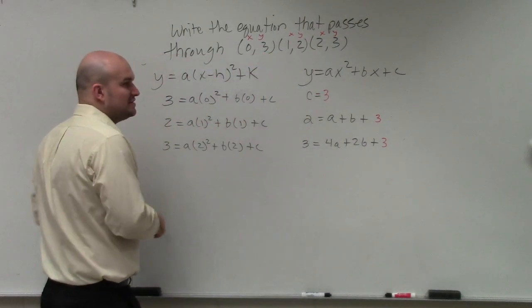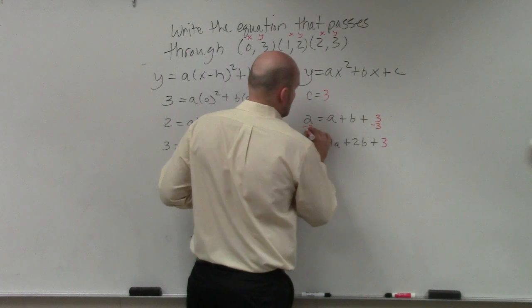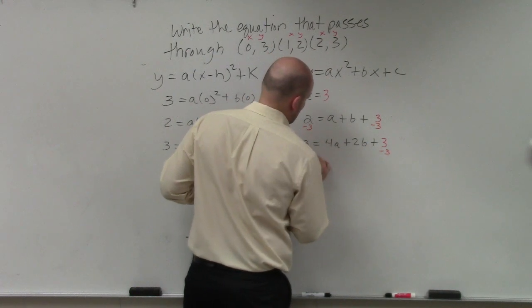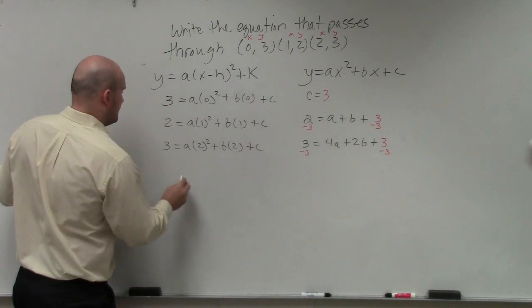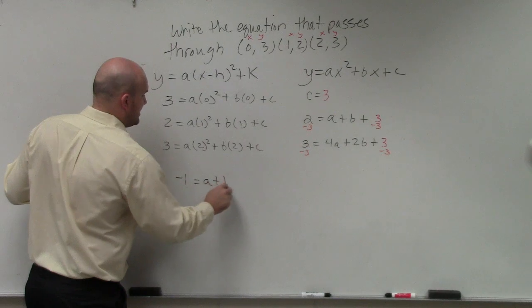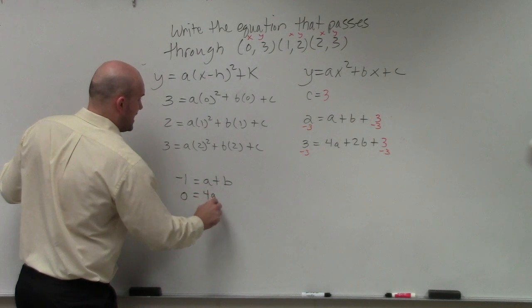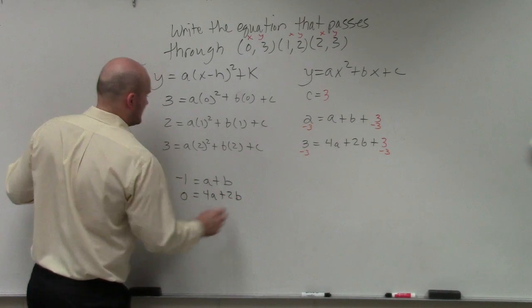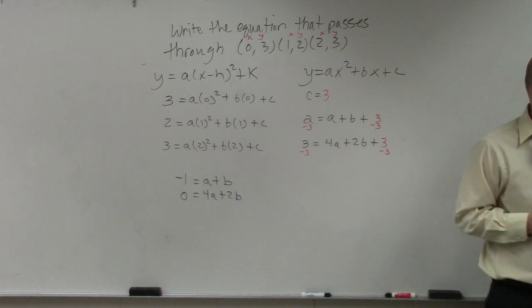So now, if I go ahead and solve each of those, as I get my variables on the same side, I get this equation. Negative 1 equals a plus b, 0 equals 4a plus 2b. Do you guys remember when we did systems of equations like this?